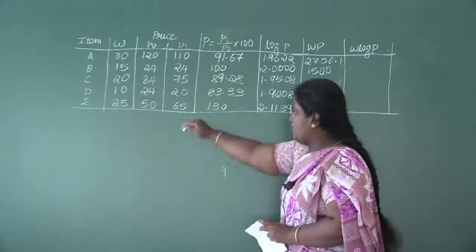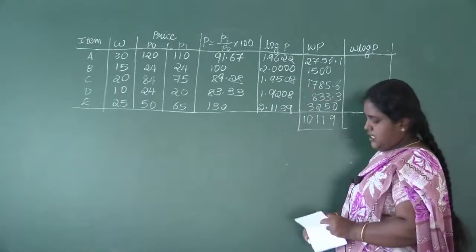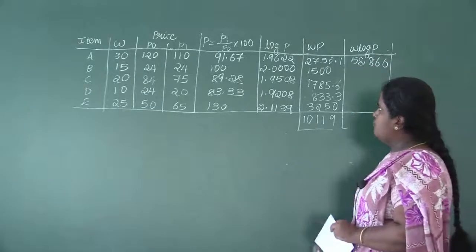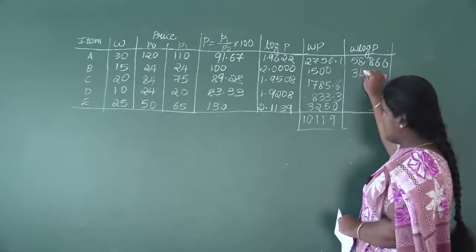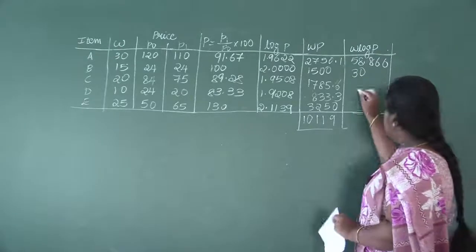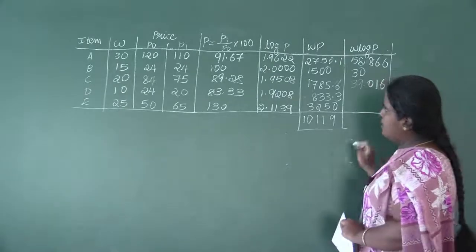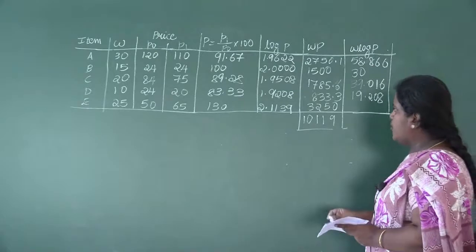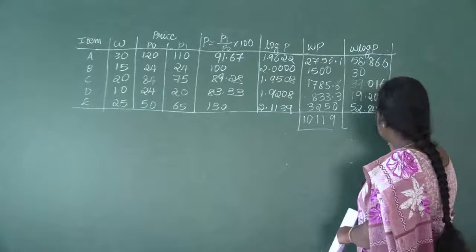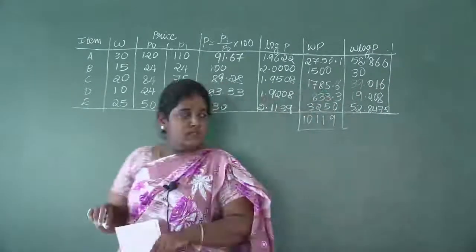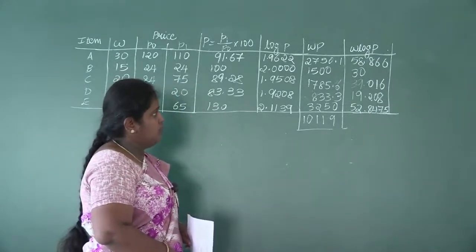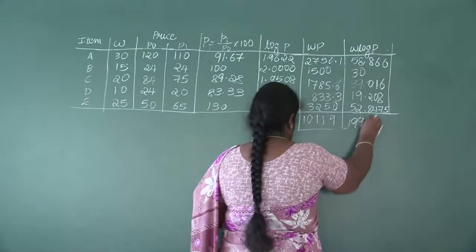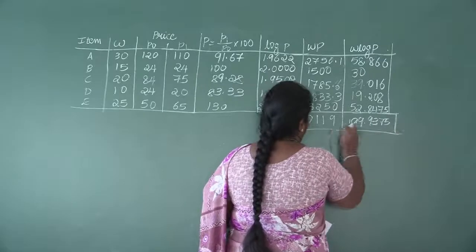Now multiply W × log P. First: 30 × 1.9622 = 58.866. Next: 15 × 2.0000 = 30. Then: 20 × 1.9508 = 39.016. Next: 10 × 1.9208 = 19.208. Wait — for item D log P = 1.9208 was used, and last: 25 × 2.1139 = 52.8475. Adding all W×log P values: 58.866 + 30 + 39.016 + 19.208 + 52.8475 = 199.9375.